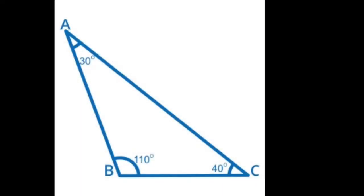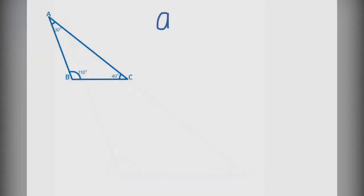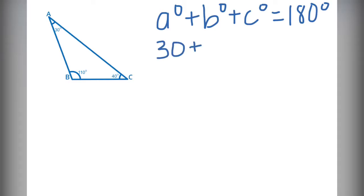One more try. Now we have an obtuse angle, obtuse triangle. We are going to go ahead and write down the theorem. That angle A plus angle B plus angle C equals 180 degrees. Fill in what we know. A is 30, B is 110, and C is 40. Set those all equal to 180, and begin combining.